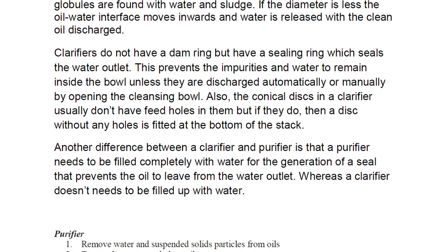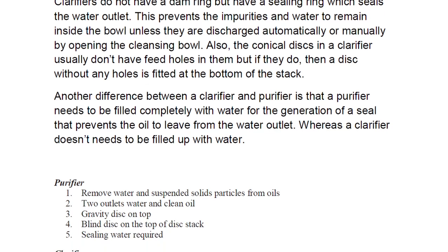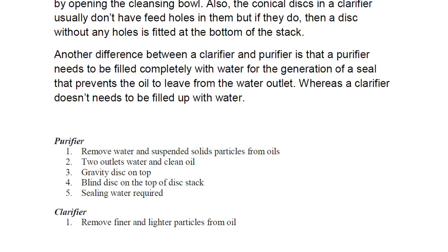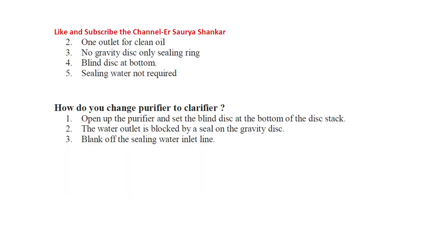In summary: a purifier removes water and suspended solid particles from oil. It has two outlets — water and clean oil — a gravity disc on top, a blind disc on top of the disc stack, and sealing water is required. A clarifier removes finer and lighter particles from the oil. It has one outlet for clean oil, no gravity disc — only a sealing ring — a blind disc at the bottom, and sealing water is not required.